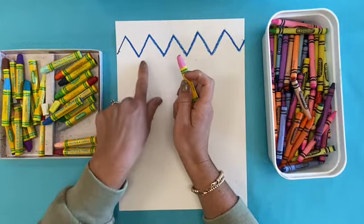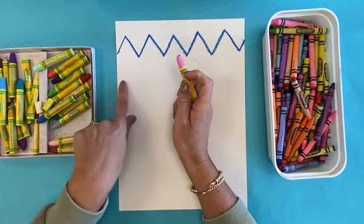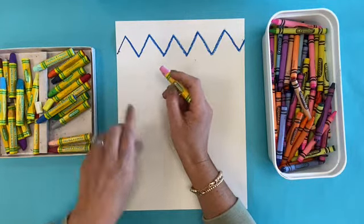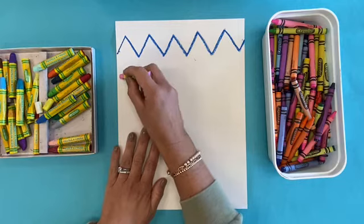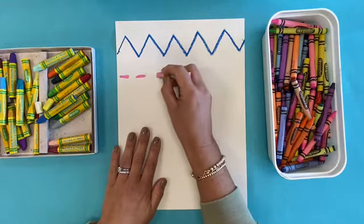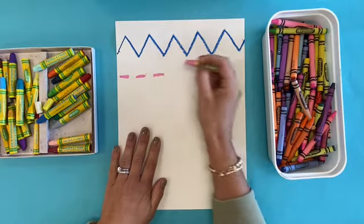Okay, great job on your zigzag. Let's go down just below, and now we're going to make a dashed line. Here we go—a dashed line. So a line, and we're gonna skip a space, and a line, and we're gonna skip a space. This is called a dashed line.